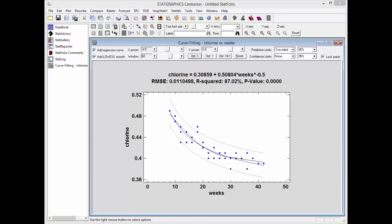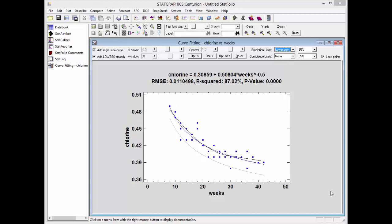Let's suppose now that there's a lower acceptable limit for chlorine. Suppose that the product will not operate as intended if chlorine falls below 0.4. We can use this model and the prediction limits to help determine a reasonable shelf life. The way I do that is I'd go up to the prediction limits and I'd first set them to be lower 95% confidence bounds. I'd then find out where the lower limit intersected 0.4 by pushing the right mouse button and putting my check mark on locate.